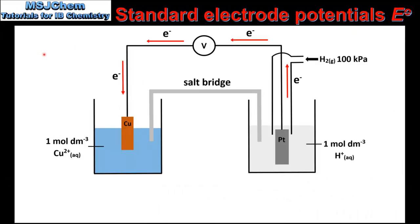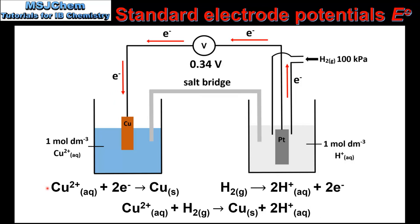In our next example we will determine the standard electrode potential of a copper half cell. In this diagram we have a copper half cell connected to an SHE. The reading on the voltmeter shows 0.34 volts. The electrons are flowing from the SHE to the copper half cell, so the SHE is the anode and the copper half cell is the cathode. The half equations show that copper ions are being reduced in the copper half cell and hydrogen gas is being oxidized in the SHE. This occurs because copper ions are a weaker reducing agent than hydrogen gas and therefore have a greater tendency to undergo reduction.